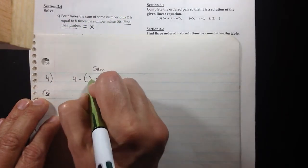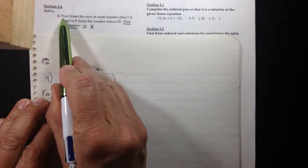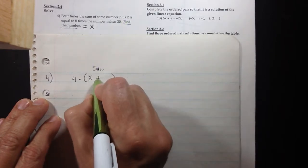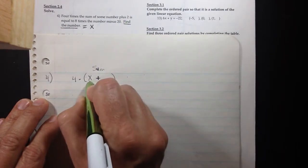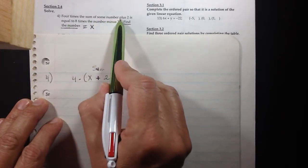Four times the sum of some number plus two, so what we are summing or adding is X and a two. Four times the sum of some number plus two.